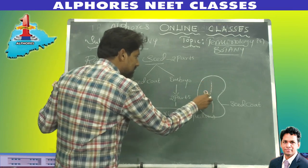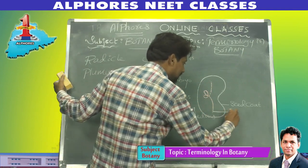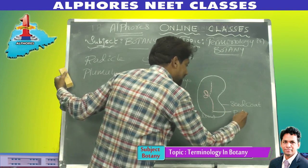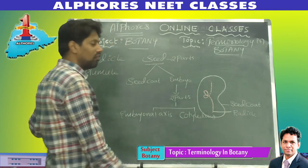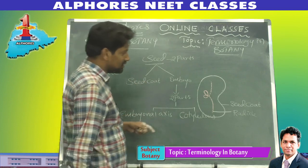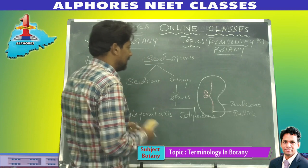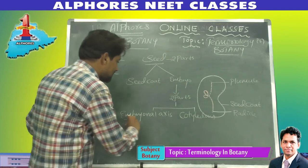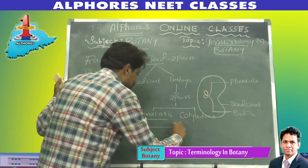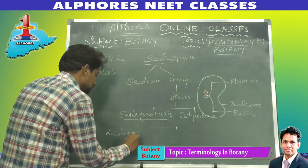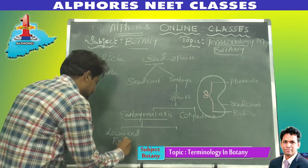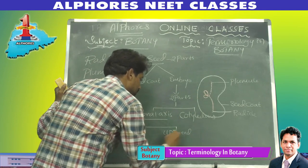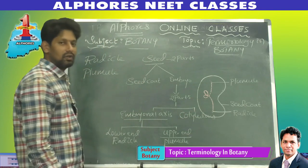Now, this line in the diagram indicates the embryonal axis. The lower end of the embryonal axis is called the radicle. The upper end of the embryonal axis is called the plumule.